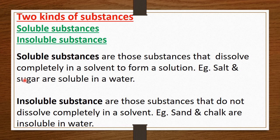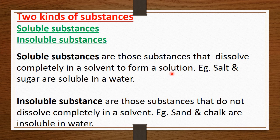There are two kinds of substances — soluble substances and insoluble substances. Soluble substances are those substances that dissolve completely in a solvent to form a solution. For example, we saw that salt dissolved completely in water to form salty water — so salt and sugar are soluble substances, because they dissolve in water.